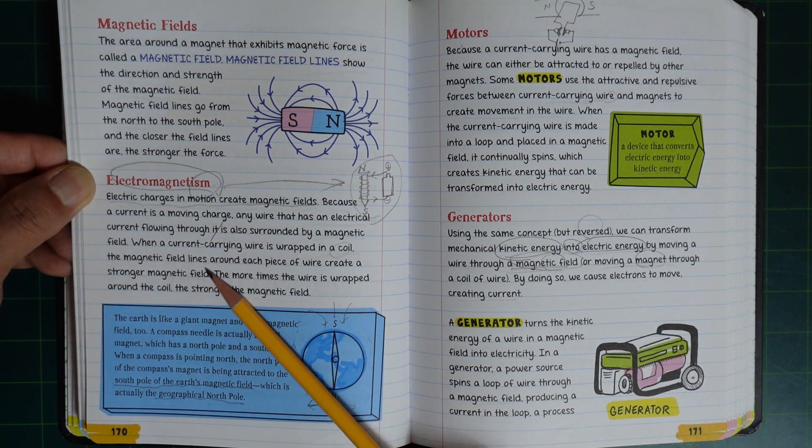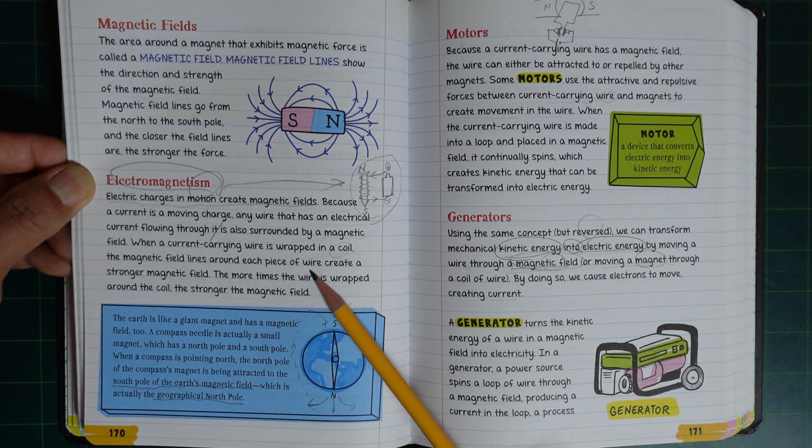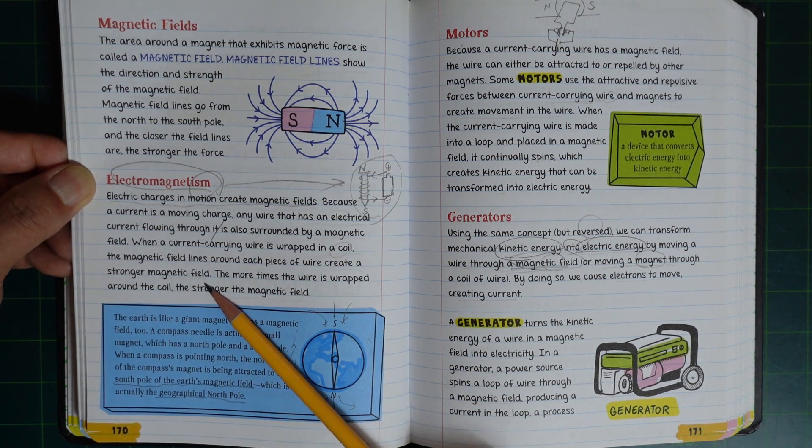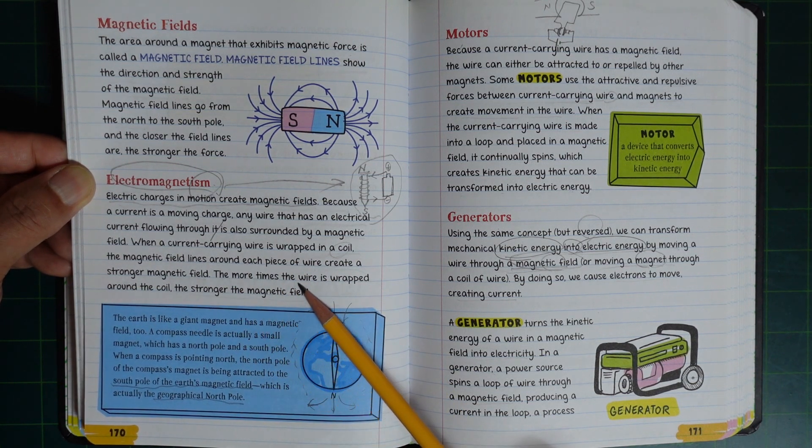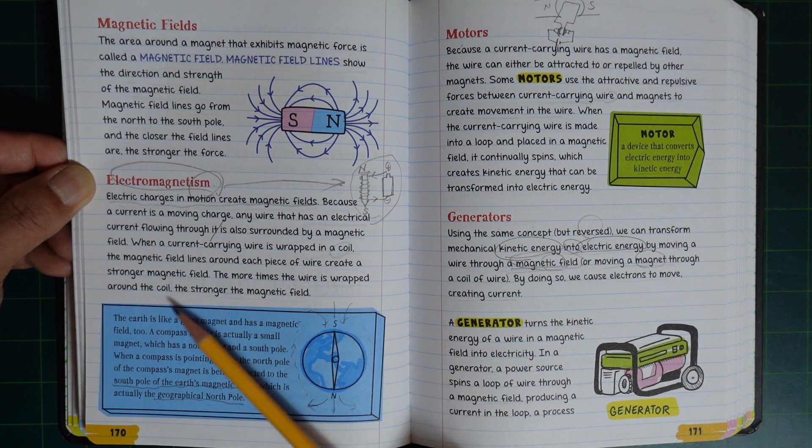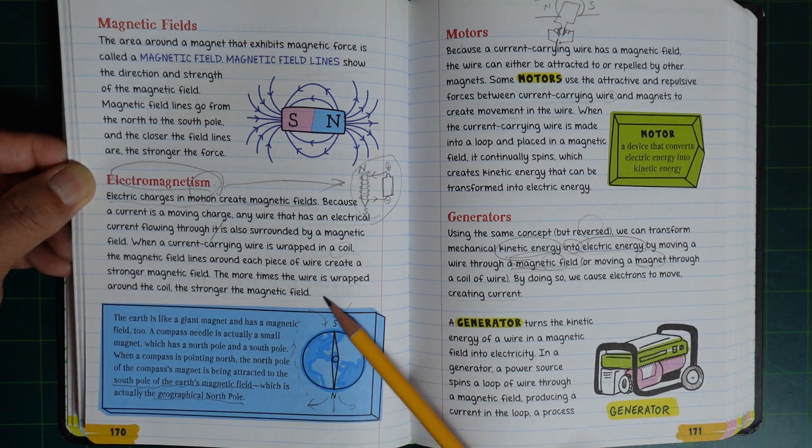The more times the wire is wrapped around the coil, the stronger the magnetic field.